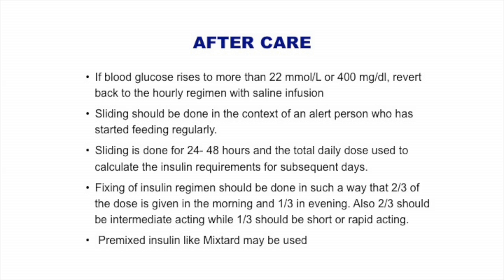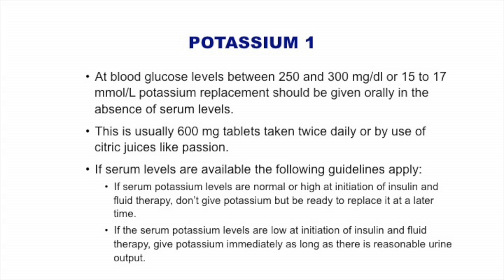Regarding potassium: the injectable form should be part of the essential stock in every reasonable hospital. If the patient begins with a low potassium, give potassium before the first dose of insulin. If you don't have potassium levels, at least by the third dose of insulin you should have given the first dose of potassium. If you don't have IV potassium, you can give potassium chloride tablets or fruit juices like passion fruit juice. I know it sounds very improvised, but what do you do when you don't have the supplies?